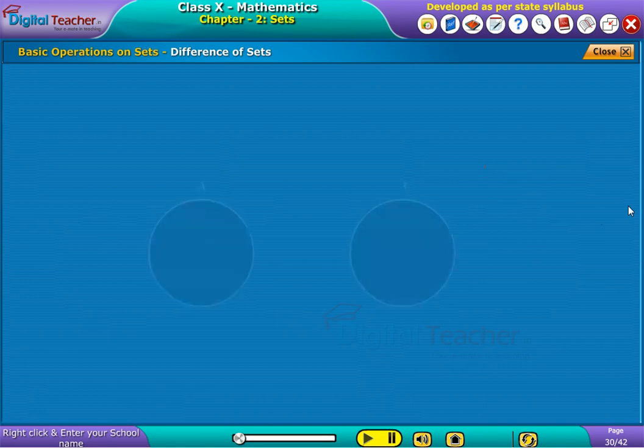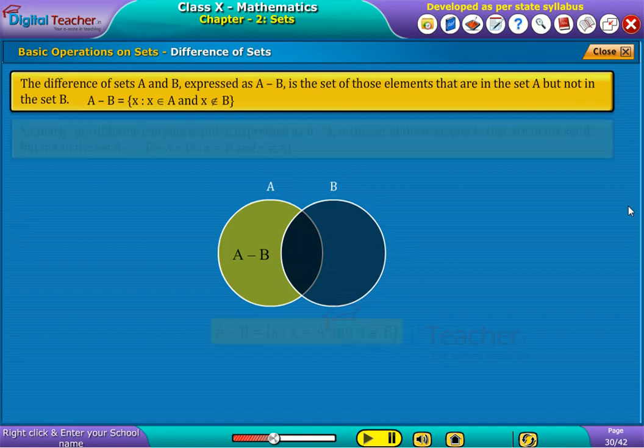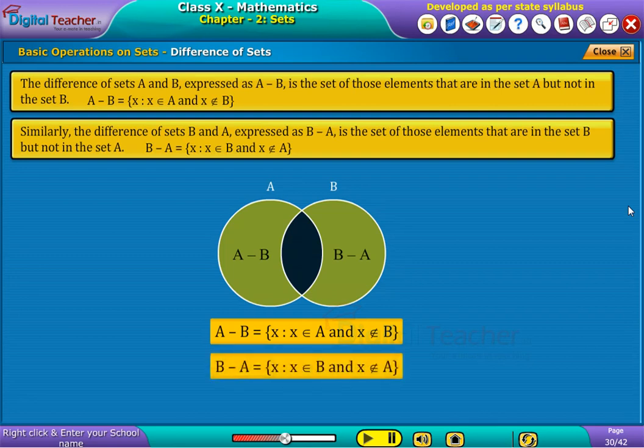Difference of sets. The difference of sets A and B, expressed as A minus B, is the set of those elements that are in the set A but not in the set B. B minus A is the set of those elements that are in the set B but not in the set A.